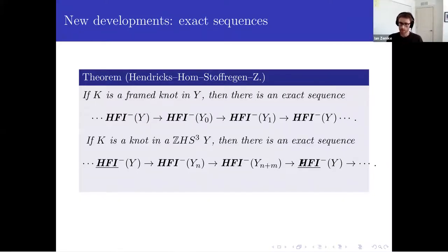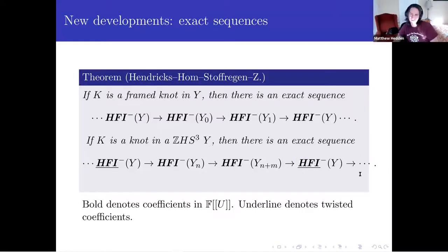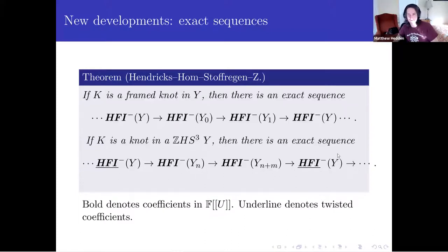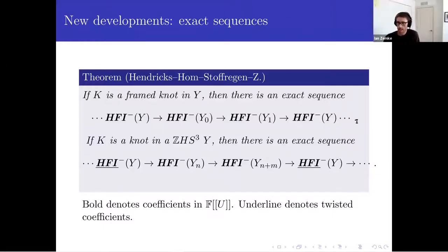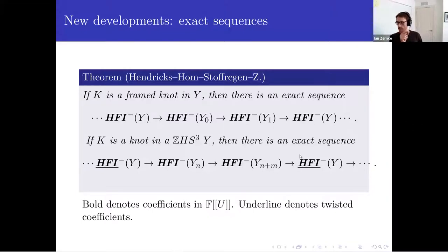There also appears a twisted version of HFI — that's kind of what you would expect if you're familiar with the exact sequences from ordinary Heegaard Floer homology. With that latter one, the involution sends B sub S to B sub minus S plus N — it shifts the surgery coefficient; it's not the identity on the twisted coefficient system.